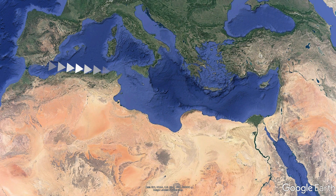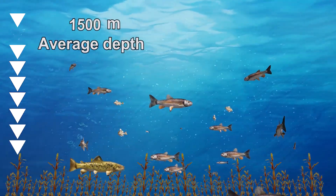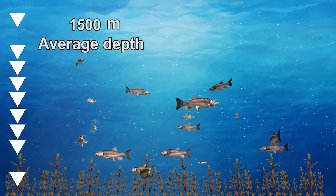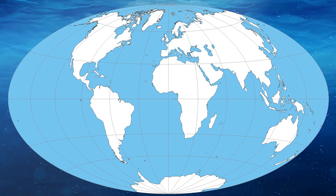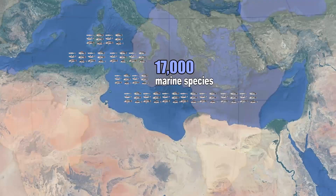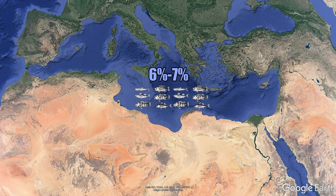The Mediterranean Sea is nearly 4,000 kilometers long, 800 kilometers at its maximum width, and has an average depth of 1,500 meters. Although the surface area of the Mediterranean Sea is only about eight-tenths of a percent of the world's ocean surfaces, its nearly 17,000 marine species comprise 6 to 7 percent of all scientifically known species.